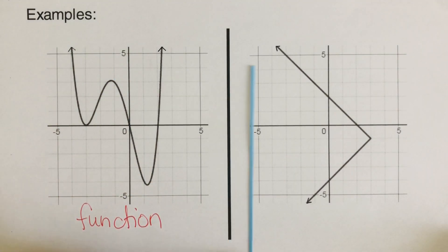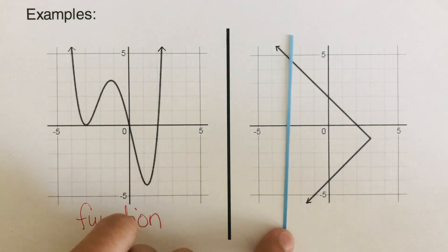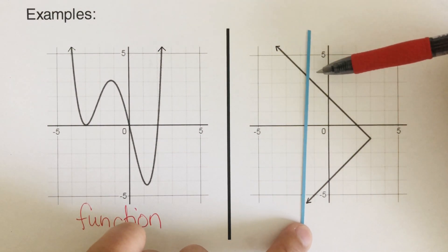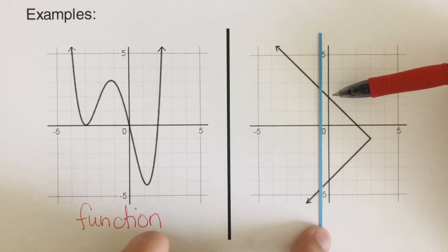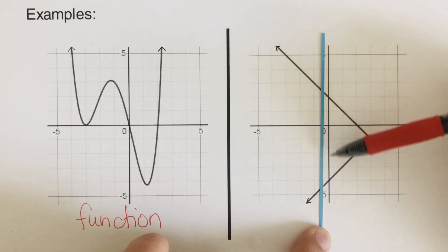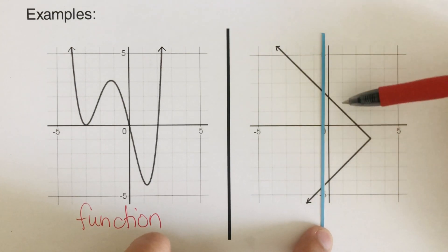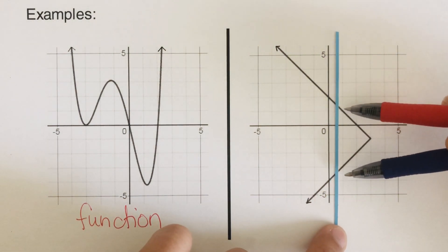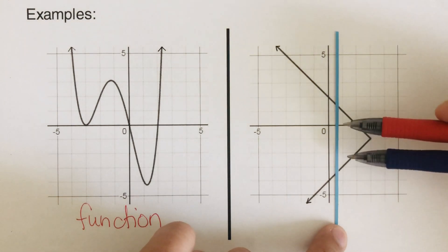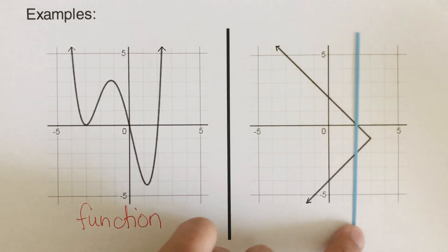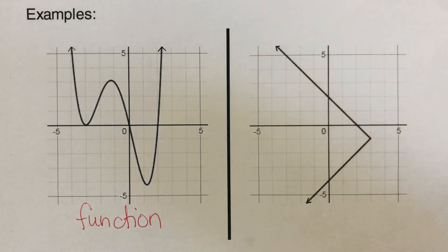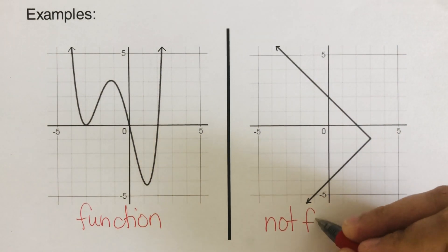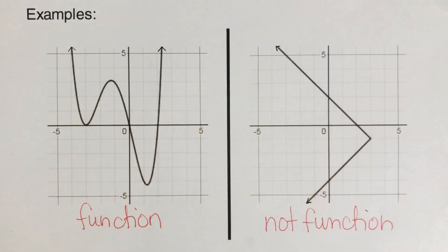Now let's take the next problem. If I pass this vertical line here, it's touching at one point. But notice that at this spot right here, it's touching at two points. So these are the two points of intersection. Since it's touching at two points on the vertical line, this is not a function.